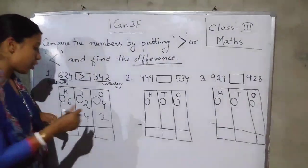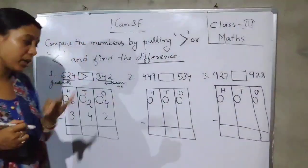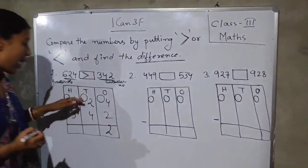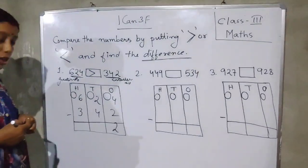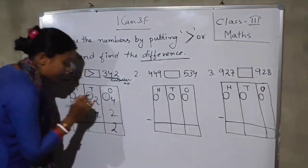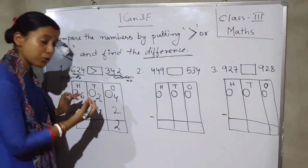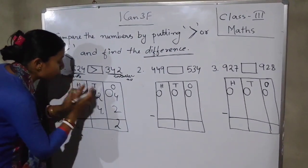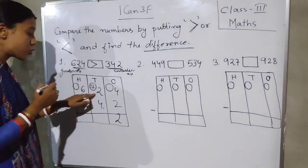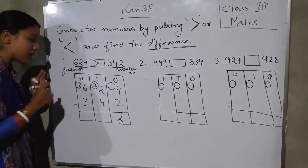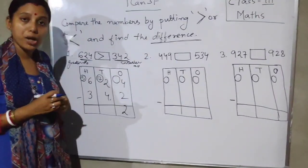Let's subtract. 4 minus 2: since 4 is in the ones place and 2 is smaller, we can subtract. But wait — looking again, we need to regroup. We have to regroup from the tens. So it will become 12 ones and the tens place will become 500.